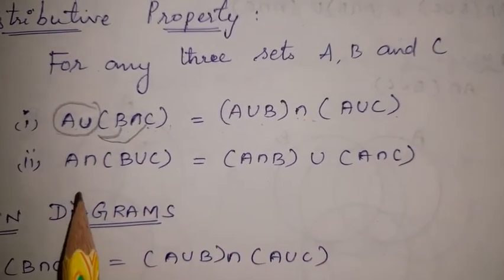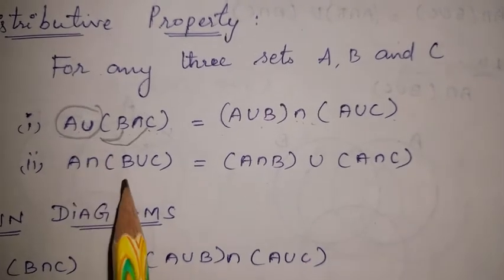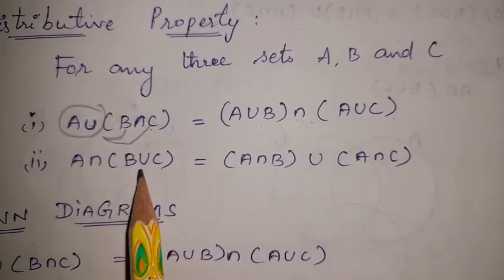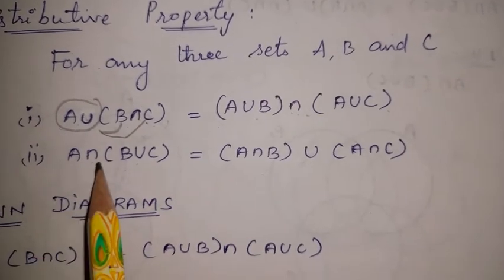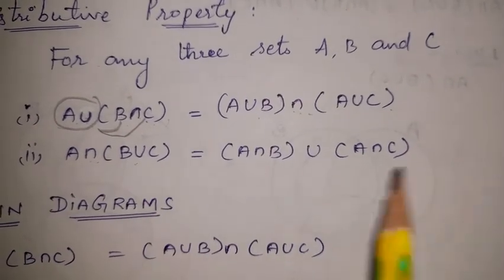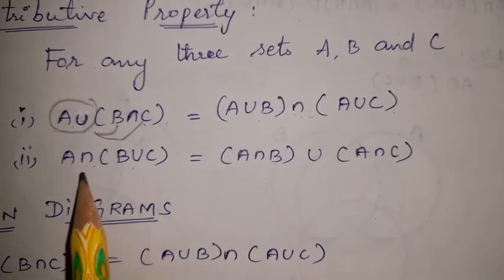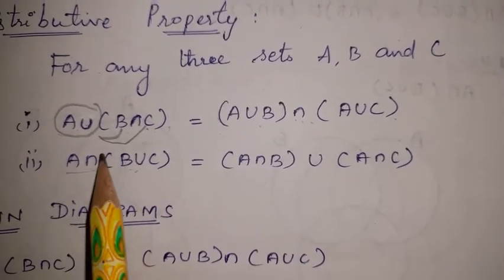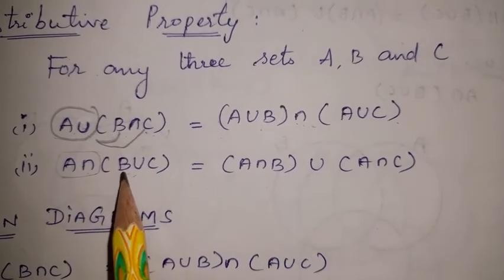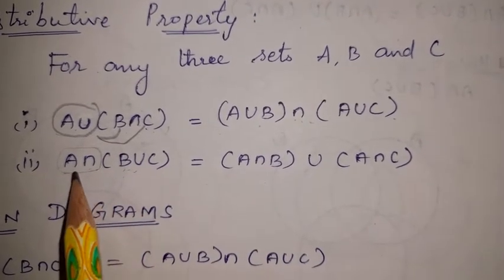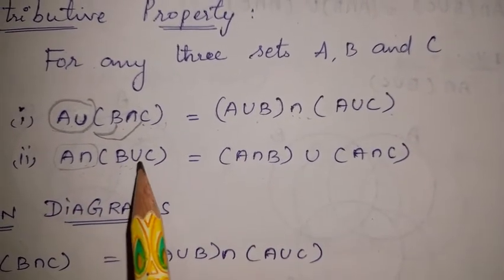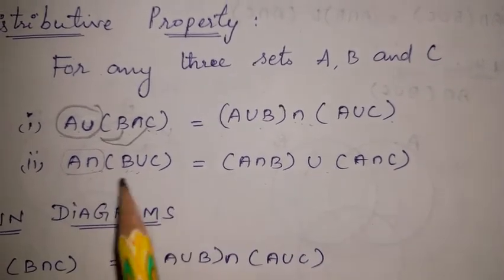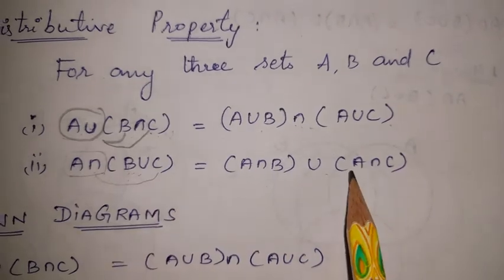The second property: instead of union, we use intersection. A intersection (B union C) is equal to (A intersection B) union (A intersection C). So we write A intersection B, then A intersection C on the right hand side.